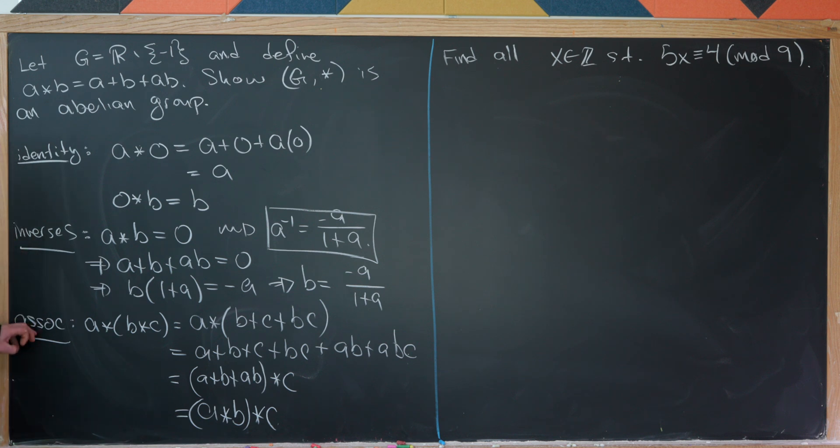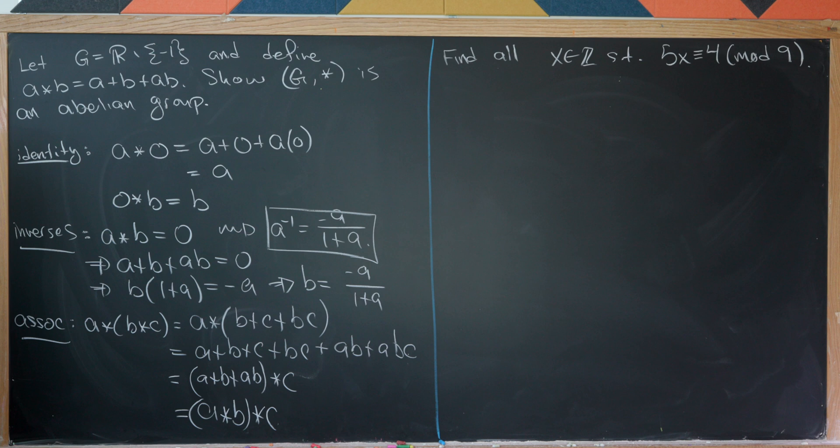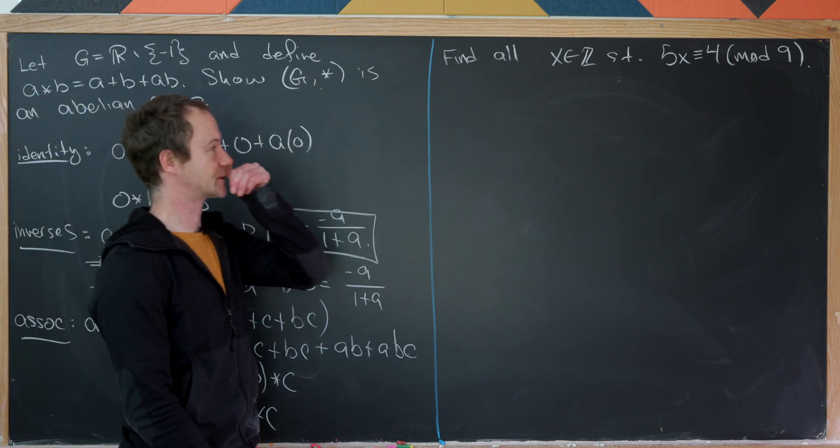All right, we've got identity, inverses, associativity. Clearly, by the construction of this star operation, we have commutativity. That's because addition and multiplication are both commutative. That means we've got an abelian group. I guess we would have to check that we have closure, but I'll leave that as a little exercise for you. Okay, so now let's move on to this next one.